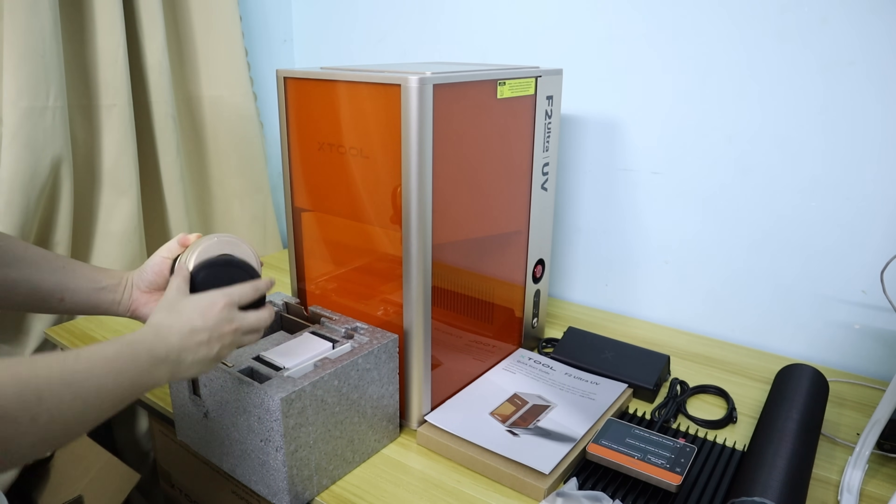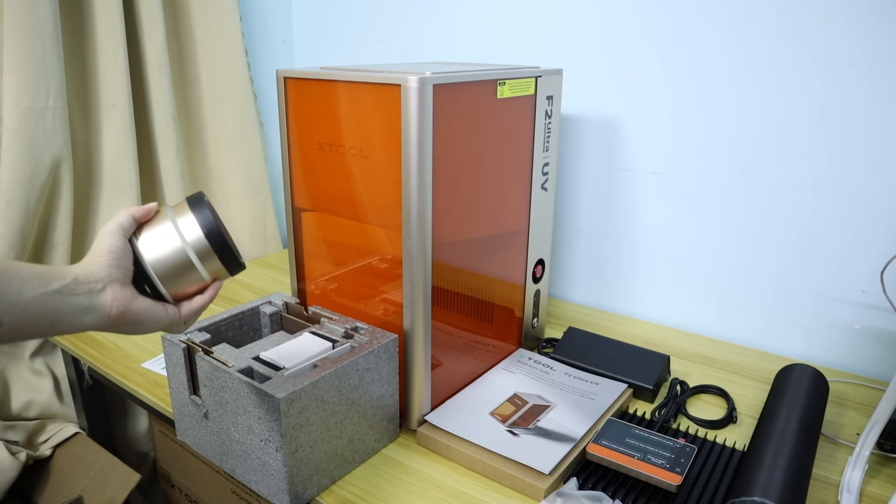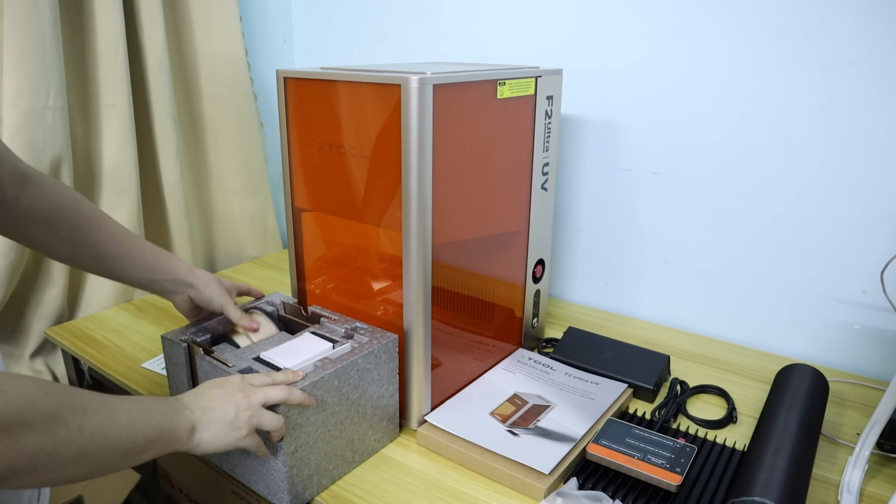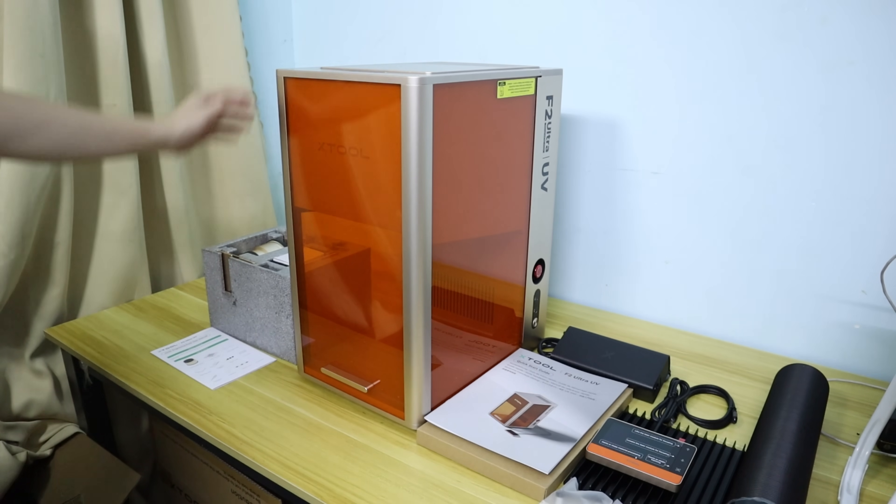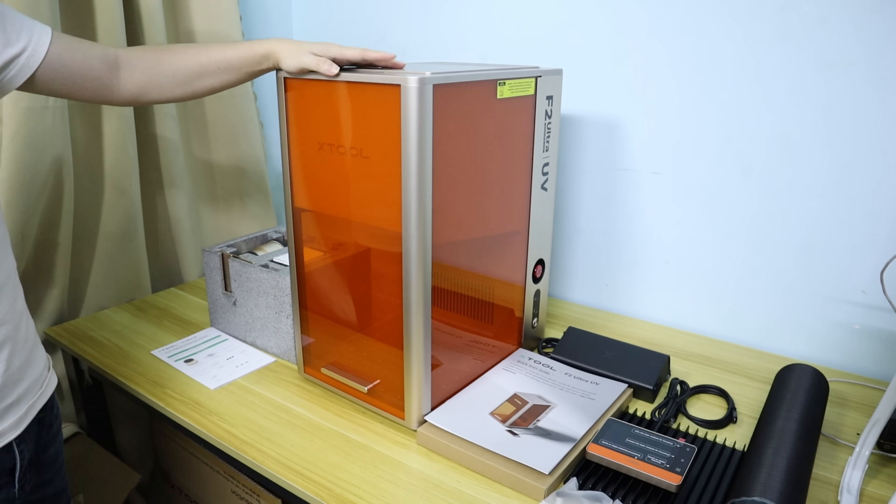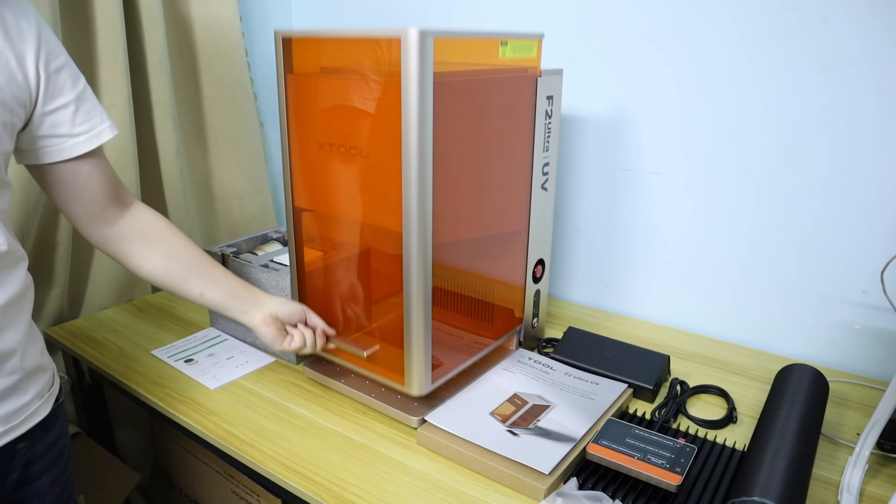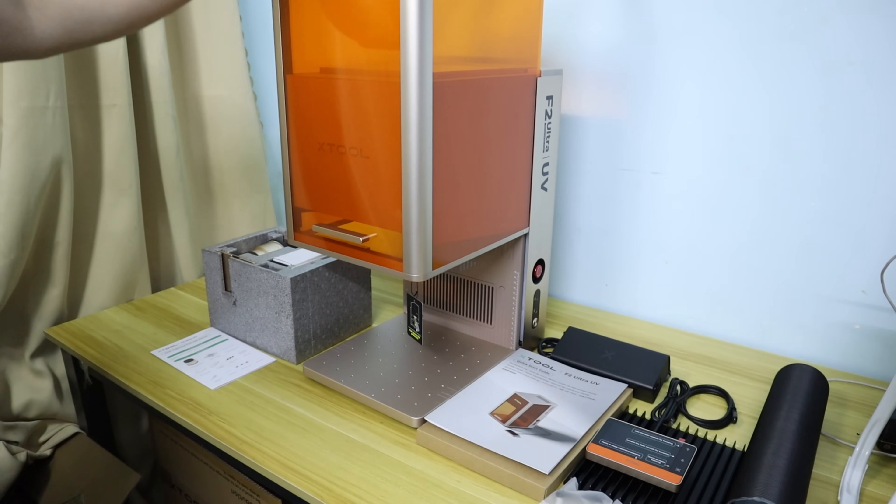The UV laser spot size delivers 10 times the precision of other laser types. In short, the ACE2-F2 Ultra UV laser engraver represents the future of laser engraving by achieving cleaner, micro-level precision engraving.